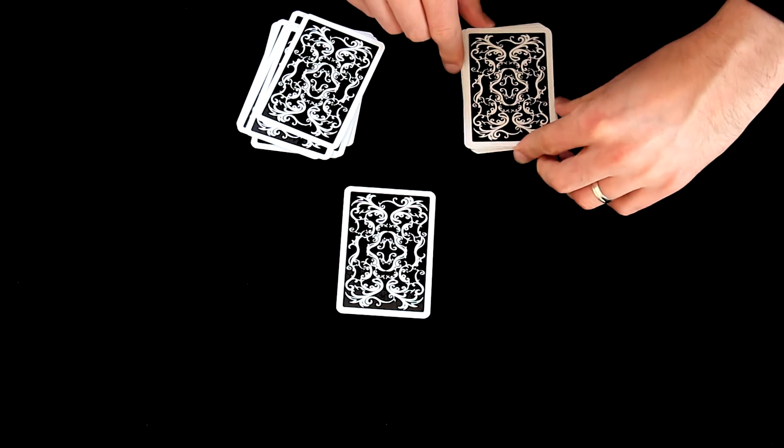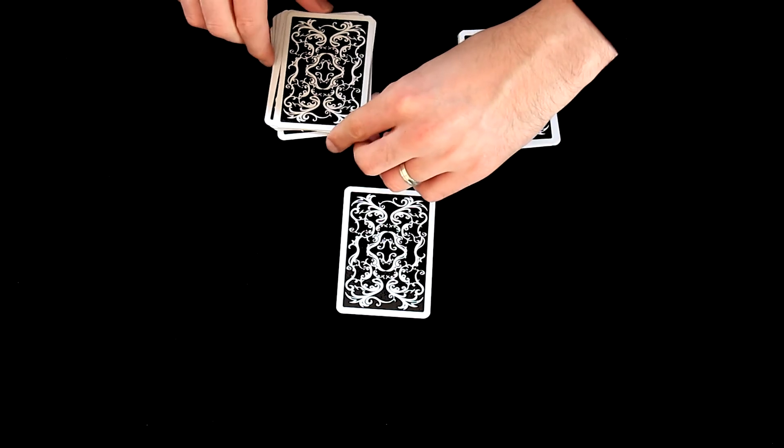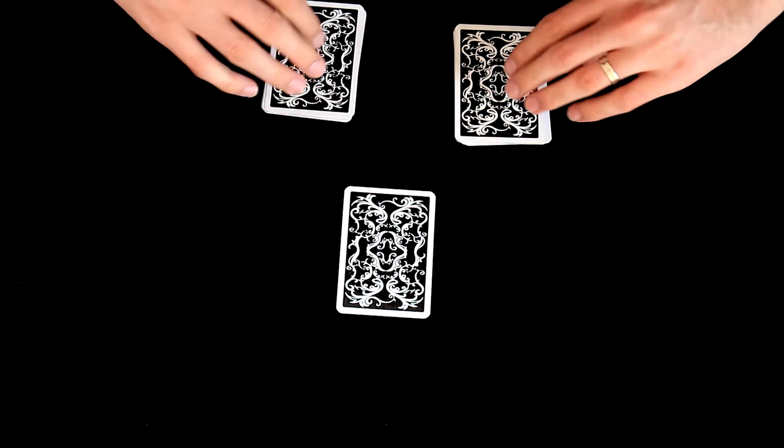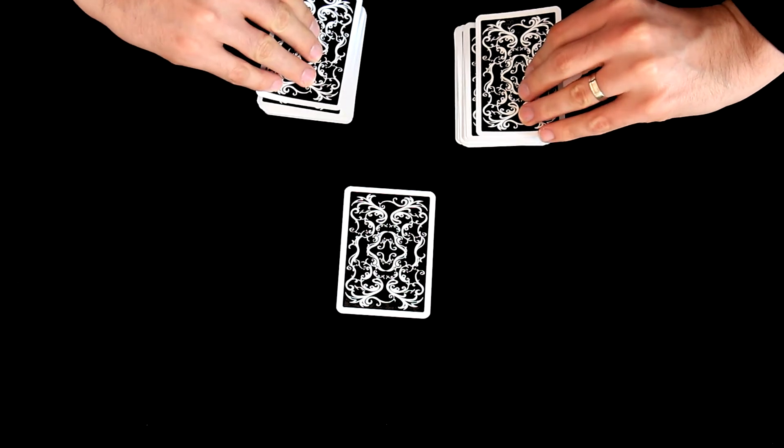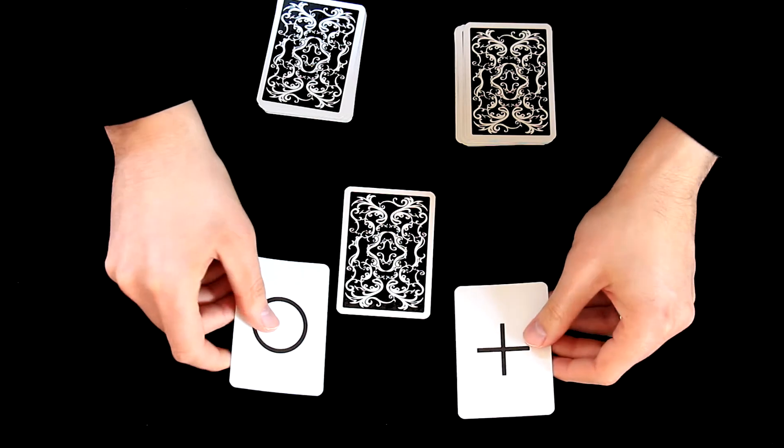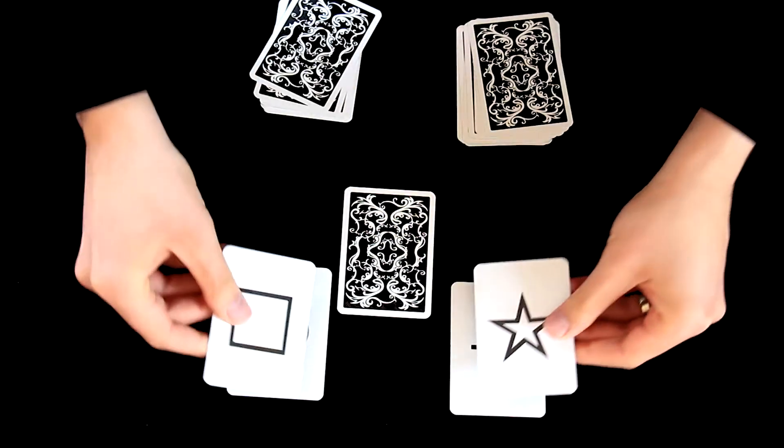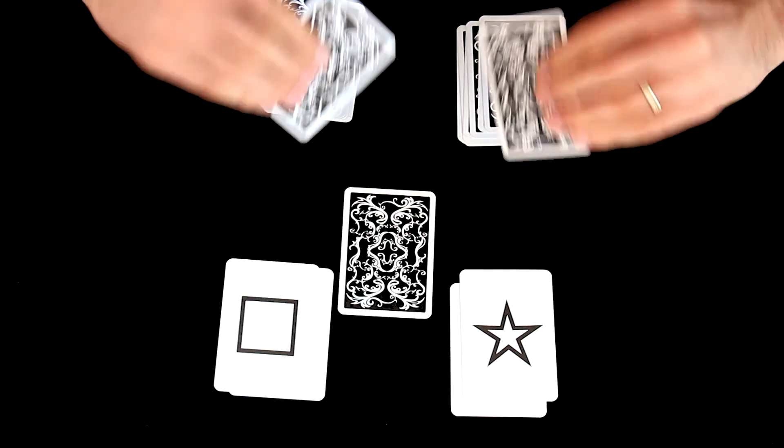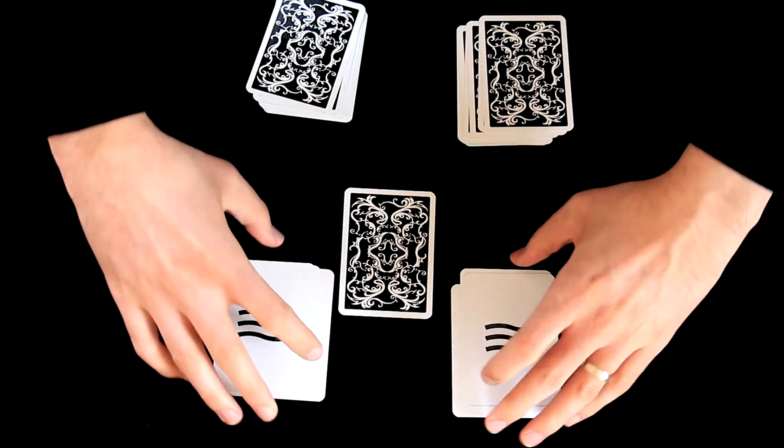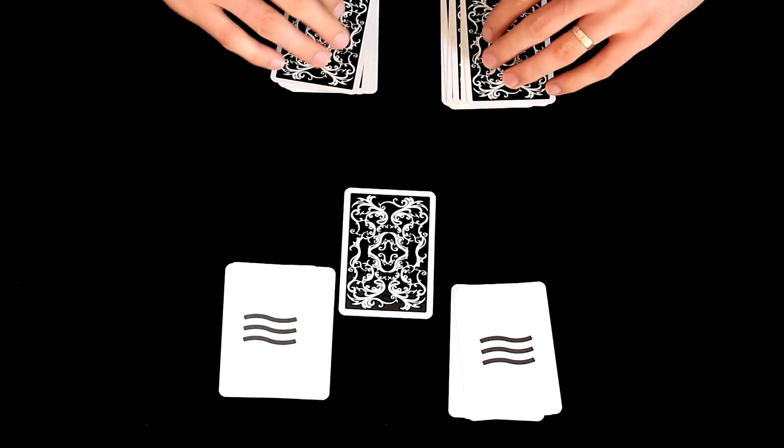What we will do now is that we will look for matching cards. So we will turn over 2 top cards from these 2 packets. So we have here no match, no match. We have here now a match - we have 2 wavy lines. Let's continue.